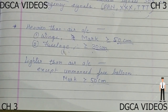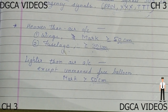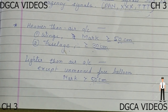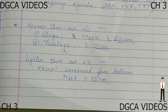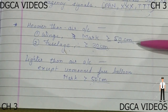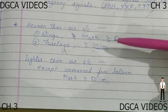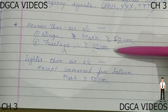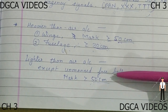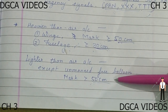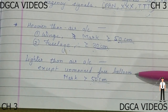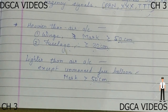Regarding the size of these marks: for a heavier-than-air aircraft, on the wings it should be greater than 50 centimeters, and on the fuselage it should be greater than 30 centimeters. For a lighter-than-air aircraft, it should be at least greater than 50 centimeters. Note that this size rule is not applicable to unmanned free balloons.